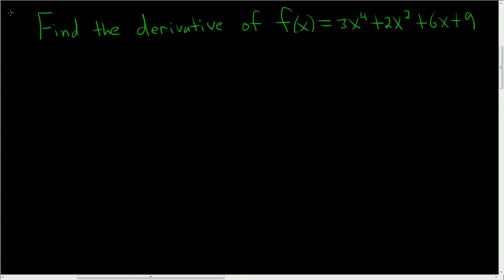Find the derivative of f(x) = 3x^4 + 2x^2 + 6x + 9. Solution: There is a formula called the power rule.